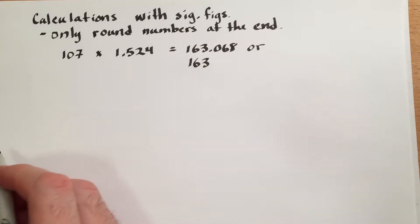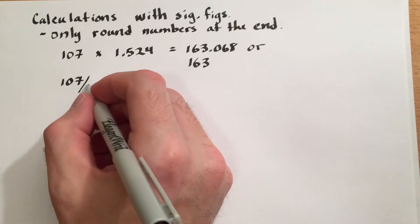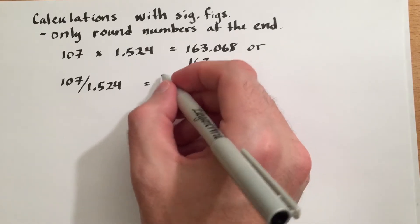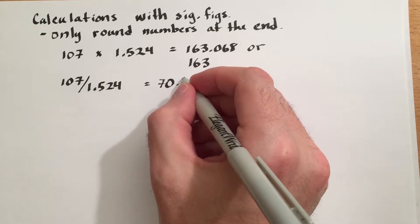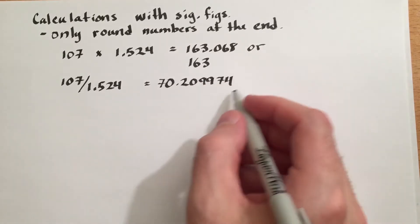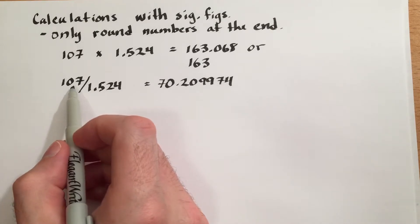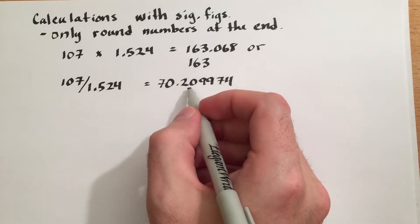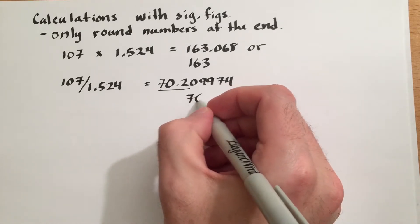The rule is exactly the same for division. So as an example, I could take 107 and divide it by 1.524. And my calculator will produce the number 70.209974 and several digits beyond, but I've rounded it a bit. We also are limited by the 3 significant figures in the 107, therefore we must round our answer to only 3 significant digits, or 70.2.